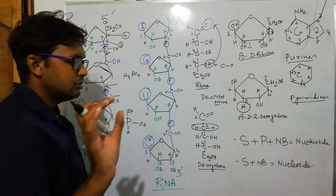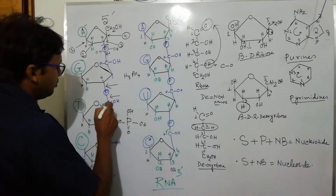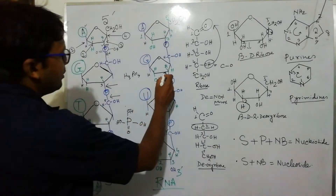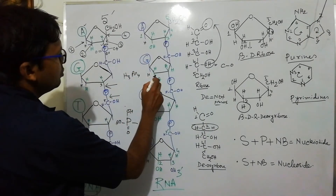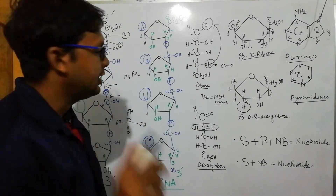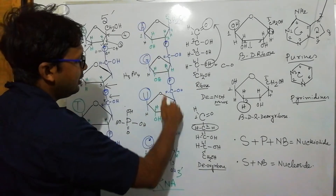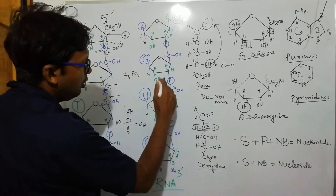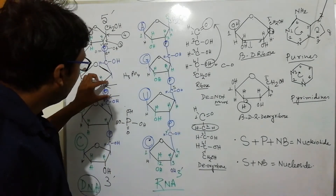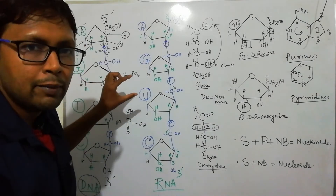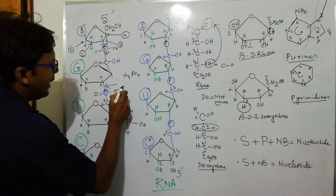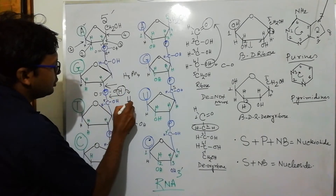These two OH groups are involved in phosphodiester linkage formation with the five-carbon and three-carbon components of two successive sugar molecules. The phosphate attaches at the three-prime carbon of the upper ribose and at the five-prime carbon of the lower ribose. Two OH groups are used in this linkage, and one OH group remains along with the double bond oxygen.